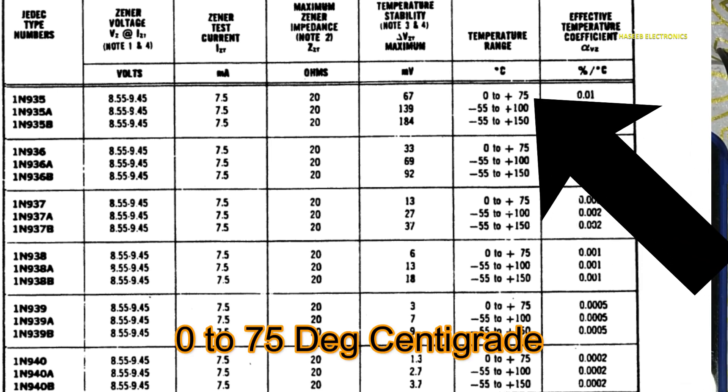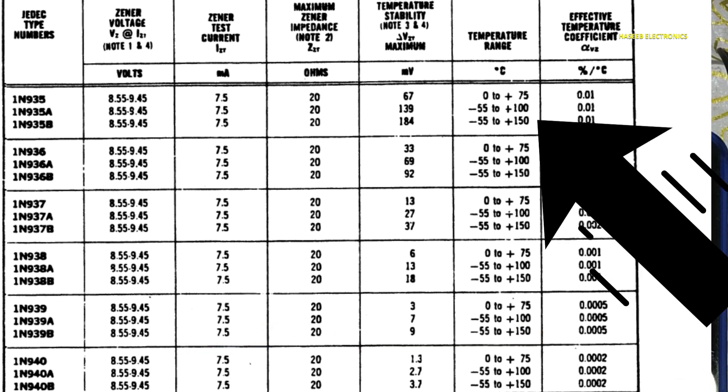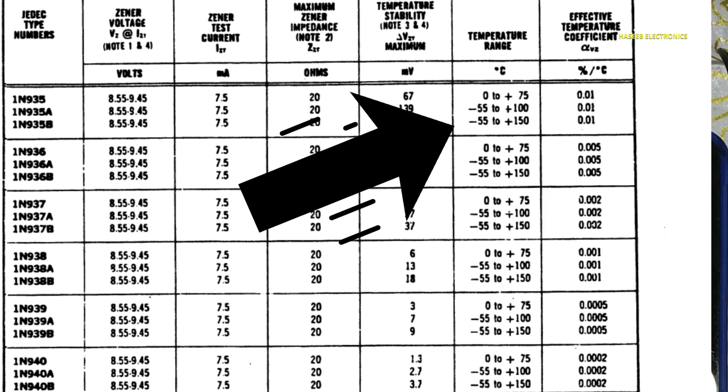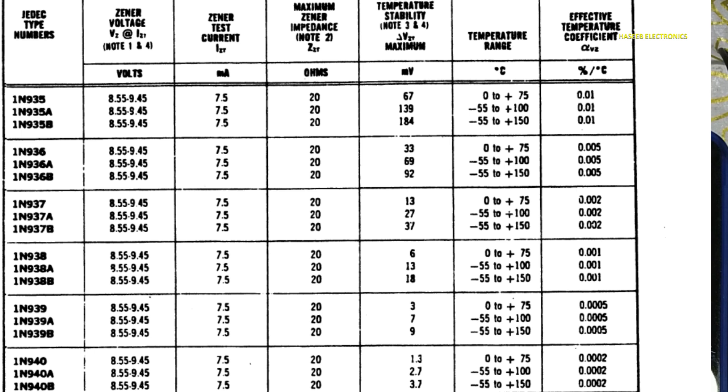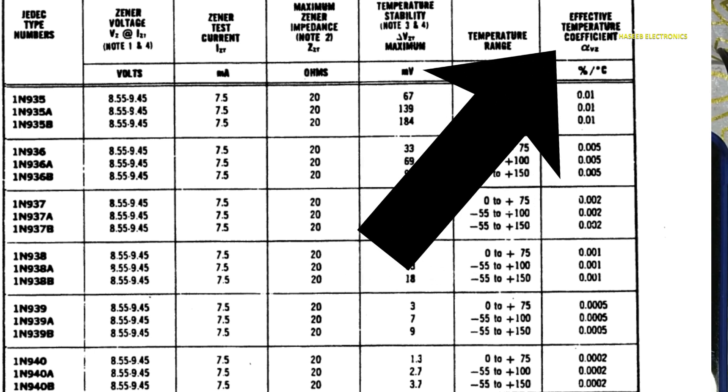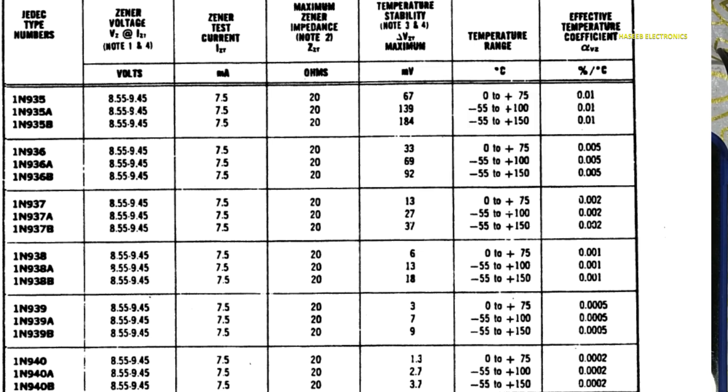And 1N935B, that is minus 55 to 150 degree. And the temperature tolerance, temperature coefficient tolerance that is involved in the numbers: 935B, 936B, 937B, 938B, 939B.